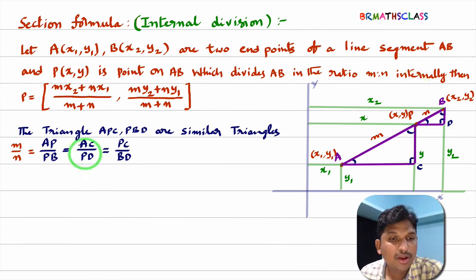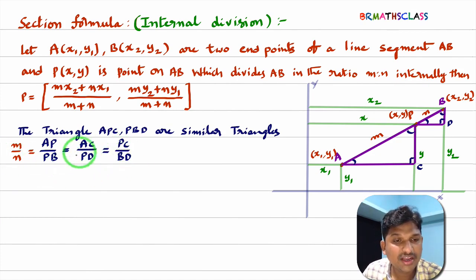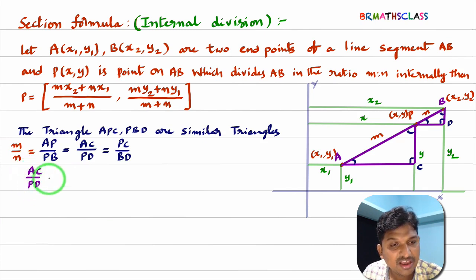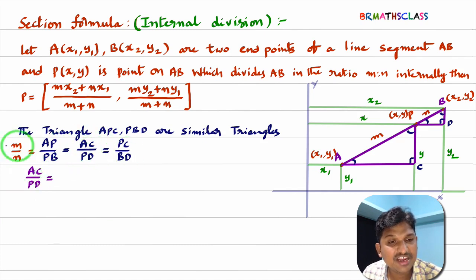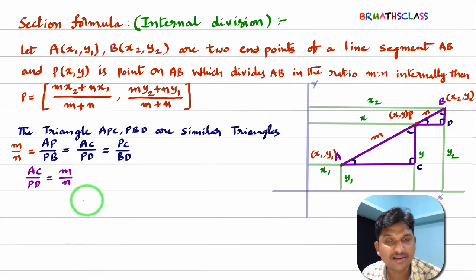I hope you are understanding. All these four ratios are equal. To get the x-coordinate of P, I will take AC/PD = M/N, which gives (x - x1)/(x2 - x) = M/N.